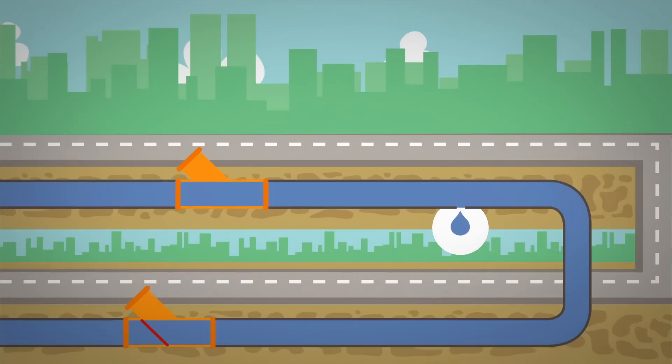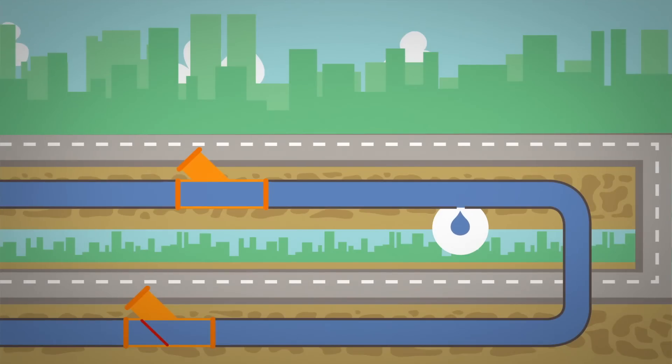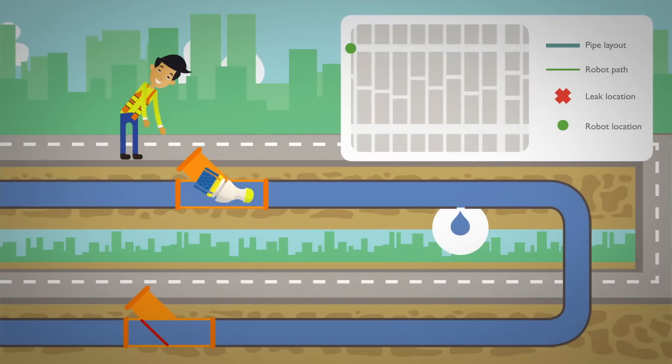Now let's look at how a technician can use this robot. The technician's job is to find if there are water leaks and where they are. He arrives at the job site and puts the robot into the underground water pipes through a customized robot launcher.